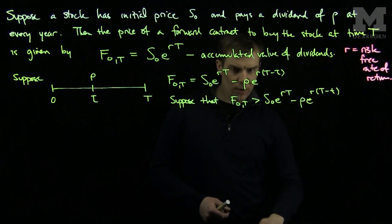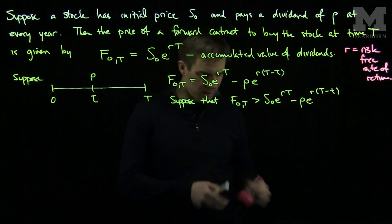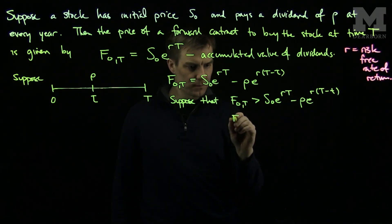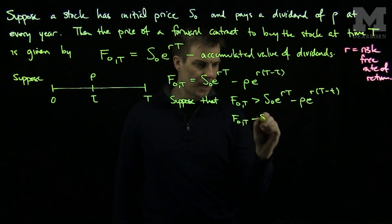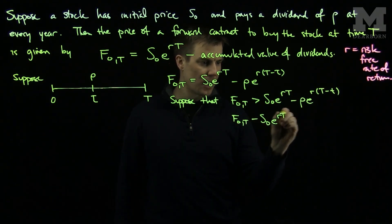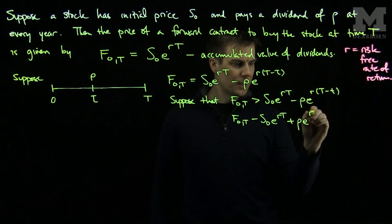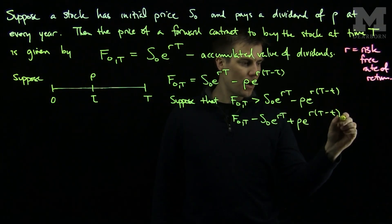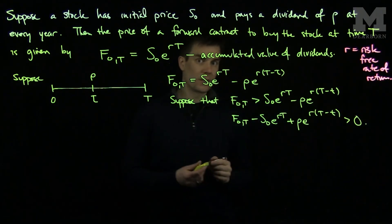And what we can do is we can rewrite this in the following way. We can write this as F0T minus S0 e to the rT plus rho e to the r(T-tau), is strictly bigger than zero.